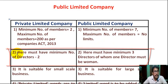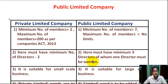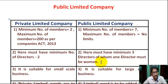Number two: in a private limited company, the minimum number of directors must be two. In a public limited company, there must be a minimum of three directors, of whom one director must be a woman.